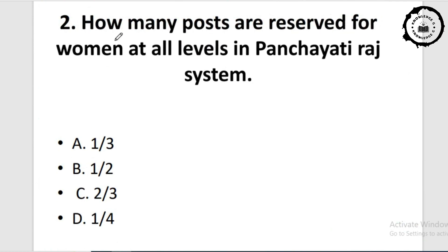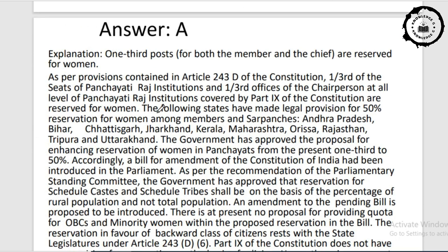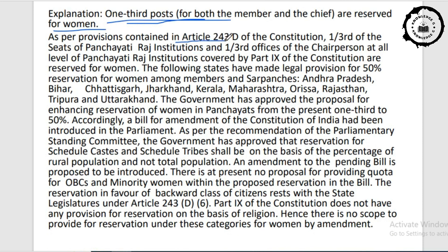Question two: how many posts are reserved for women at all levels in the Panchayati Raj system? Option A: 1/3. Option B: 1/2. Option C: 2/3. Option D: 1/4. The correct answer is option A — 1/3. As per Article 243D of the Constitution, 1/3 of the seats of Panchayati Raj institutions and 1/3 of the offices of the chairperson at all levels are reserved for women.